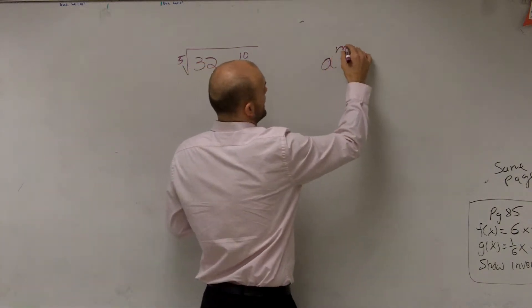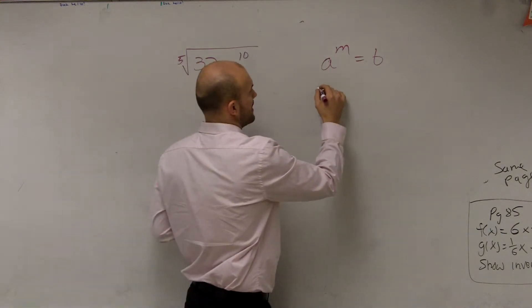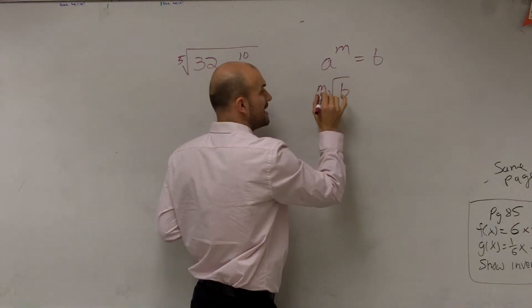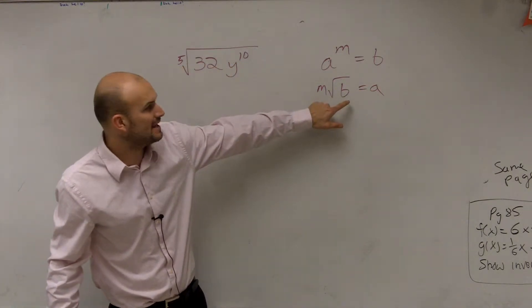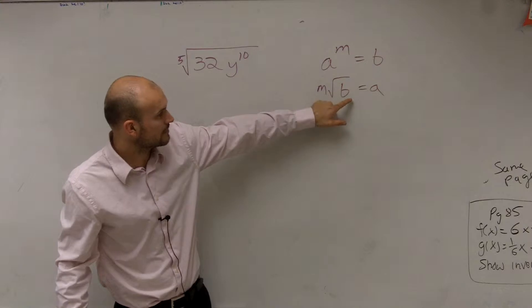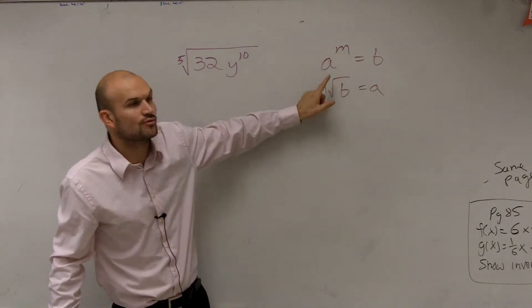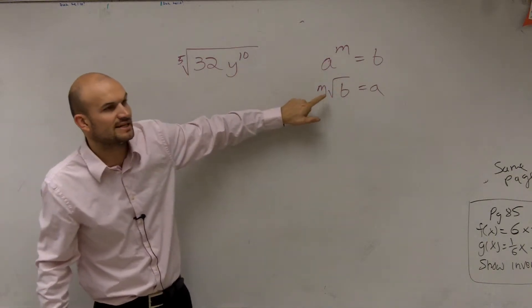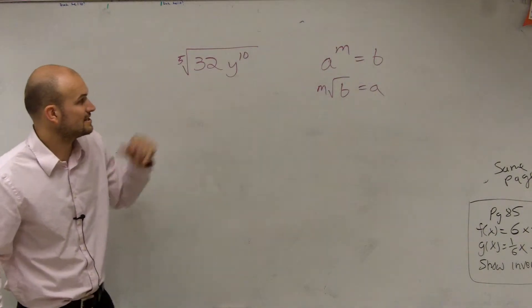Because remember we stated this: a to the m equals b, as m to the b, or the m root of b equals a. So what we want to do is, here we have our b. We want to find out what is this exponent that we need to raise to get to this root? That's going to equal our a to the m power.